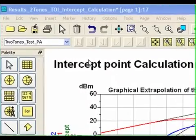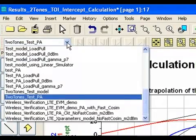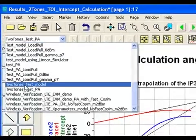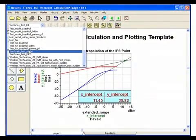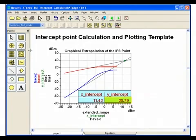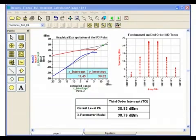Now, if I change the data set to read in the X-parameters model instead of the circuit level PA, notice the TOI becomes 38.79 dBm. Again, this illustrates the accuracy of the model as compared to the circuit level design. We have a third-order intercept of 38.82 versus 38.79 dBm. That is very accurate.